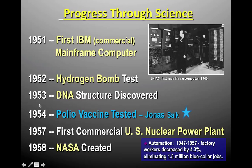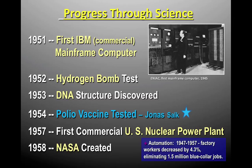In 1952, the first hydrogen bomb is tested. In 1953, DNA structure is discovered — star that, it's huge and important. In 1954, the polio vaccine is tested; you need to know the inventor, Jonas Salk. FDR had polio, and this is one of the very first vaccines tested, showing our progress through technology, science, and medicine. In 1957, you have the first commercial U.S. nuclear power plant. And then in 1958, NASA is going to be created — we'll talk more about that later.